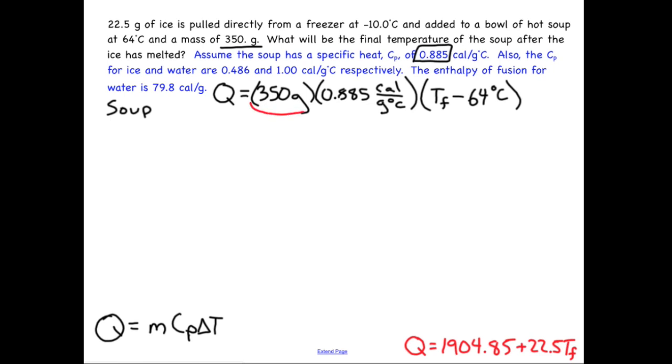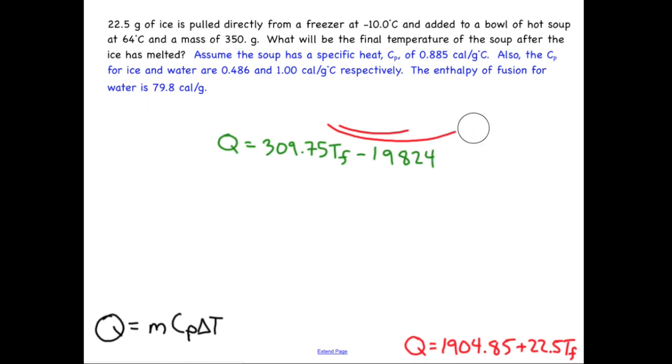You can see ultimately this is going to have two terms. I can combine those two numbers together. Gram will cancel, and that will be great. Degrees Celsius is going to cancel. This will be something that is involving calories here, which is good. That's what Q is measured in. But I'm going to take this number, and I'm going to distribute it onto the T_F and onto the 64. And I'll write it here in green. The Q is going to be equal to 309.75 T final minus 19824. So I have my two Q values now, and I'm actually done with this equation.